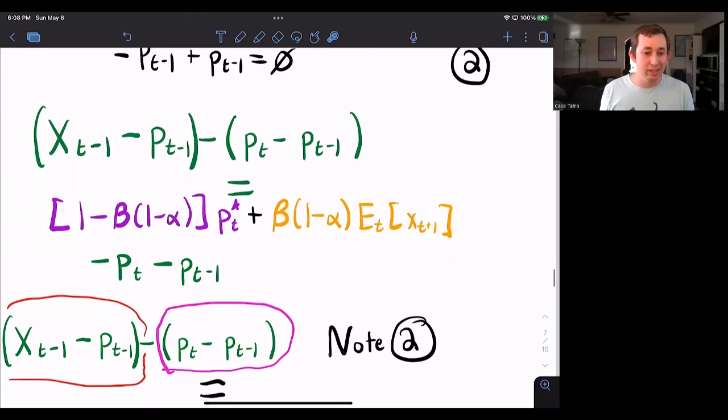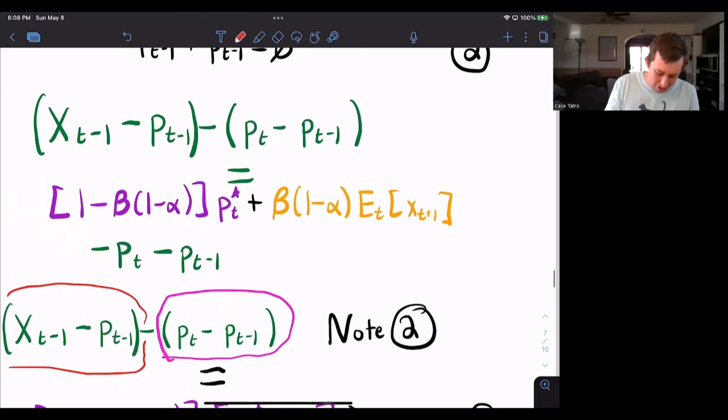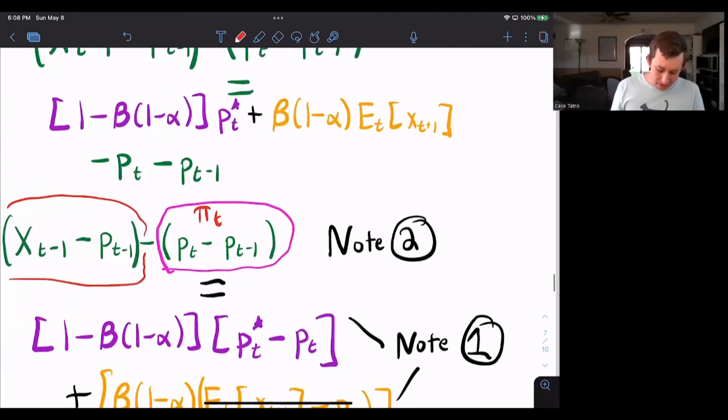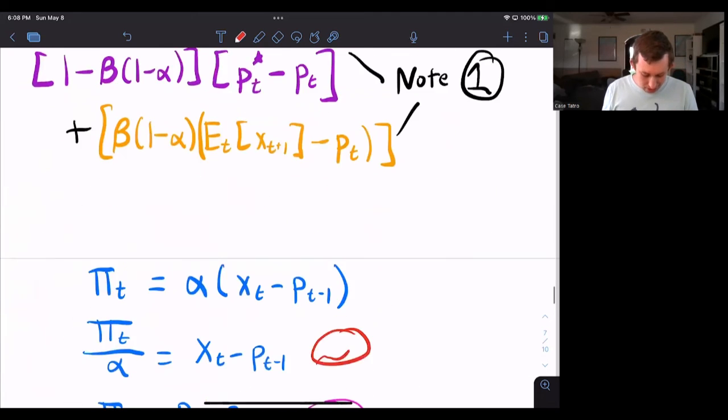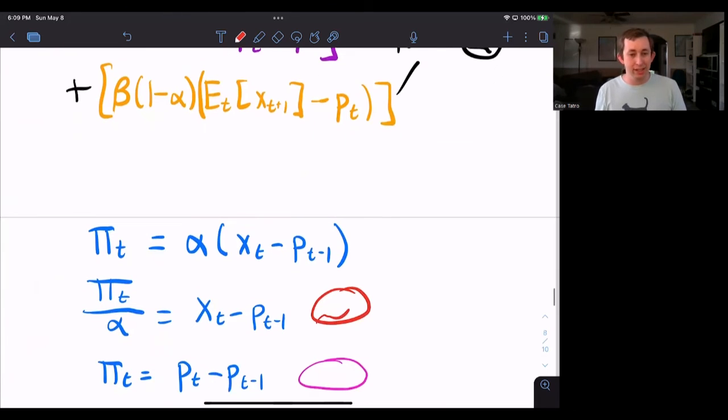I can boil it down to this equation where I have X of T minus one minus P sub T minus one minus PT minus PT minus one, because notice that I can really put in inflation here eventually. That's really why I'm putting it in there and notice that I can just keep going. I know that X of T minus P sub T minus one is pi T over alpha.